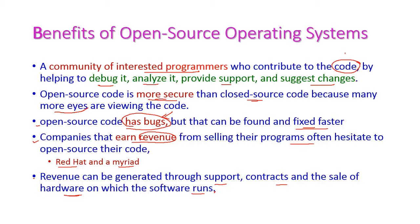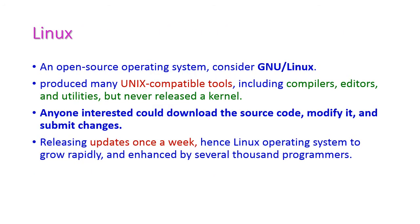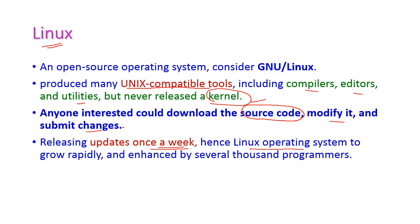The most popular open source operating system is Linux, which produces many Unix-compatible tools including compilers, editors, and other utilities, but Linux never leaves the kernel. Anyone can download the Linux open source code, modify it, and submit changes. Linux releases updates once a week — every week they release a new version — hence the Linux operating system grows rapidly, enhanced by several thousand programmers.